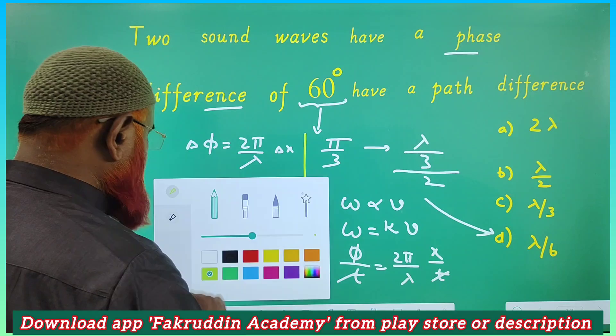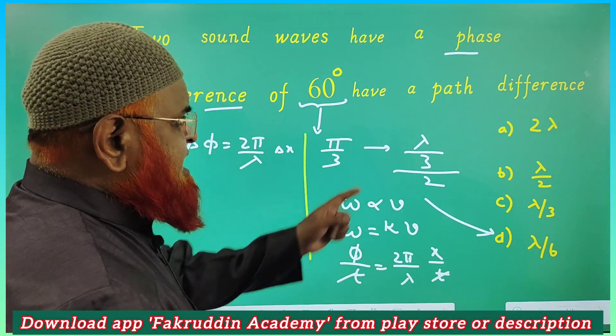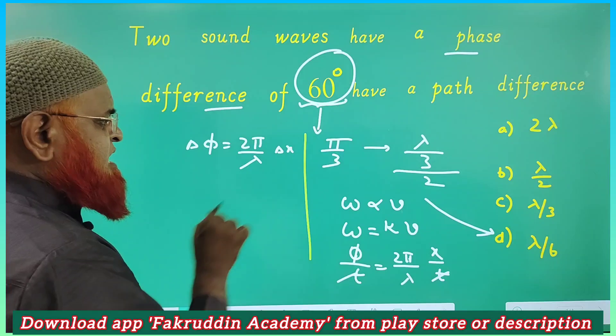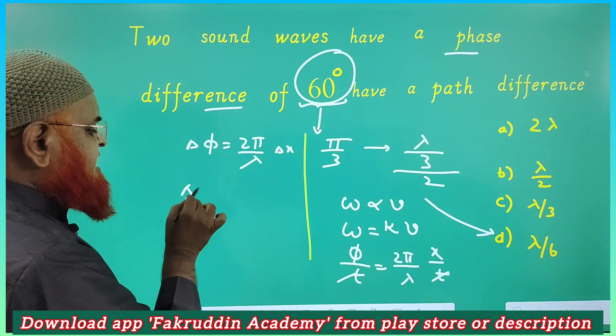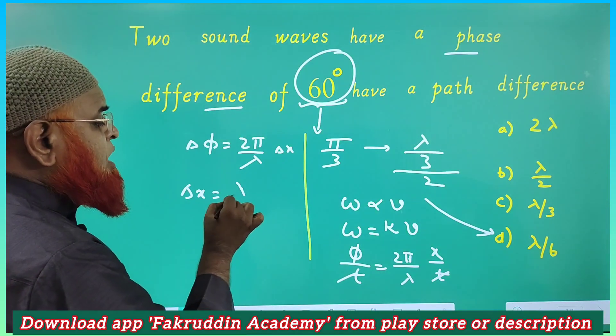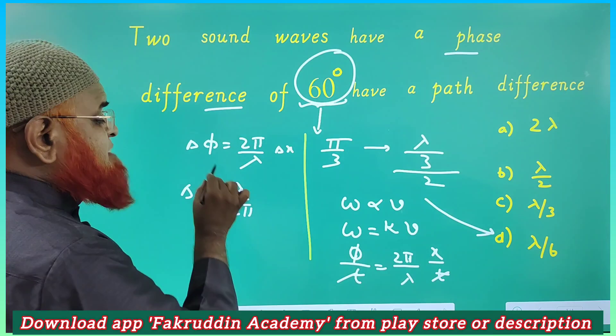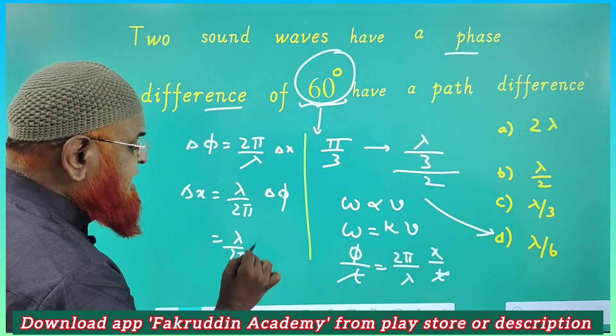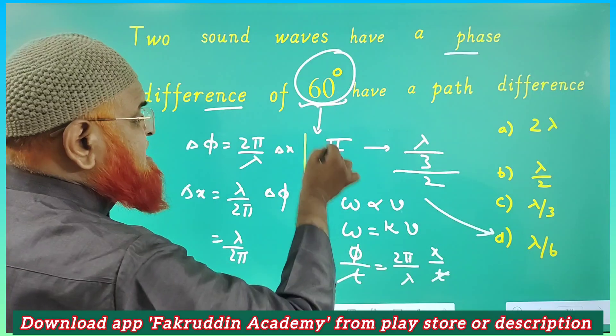So what are we going to do now? Let us discuss here. He has given the phase difference and asking us to find out the path difference. Now you can write - the phase and the path difference is equal to λ by 2π times the path difference. That is λ by 2π, Δφ is given as π/3.